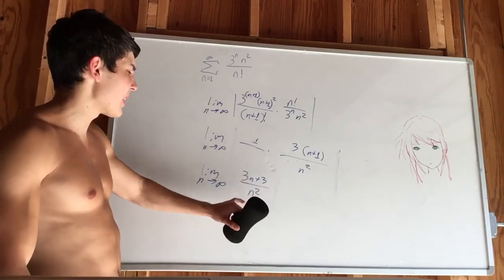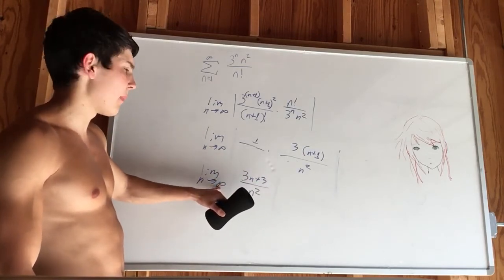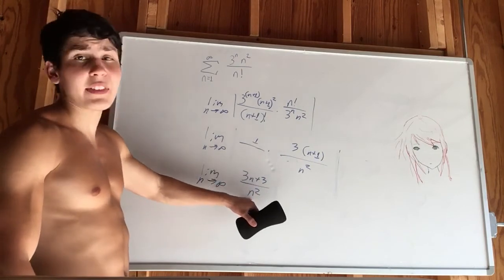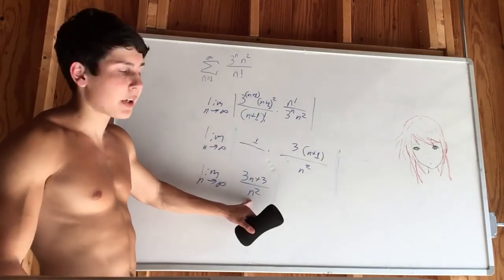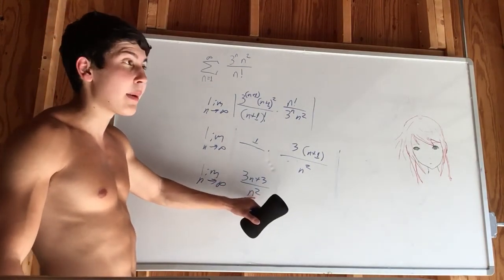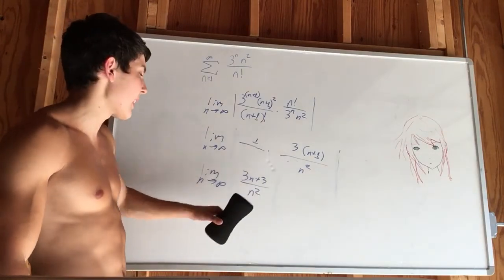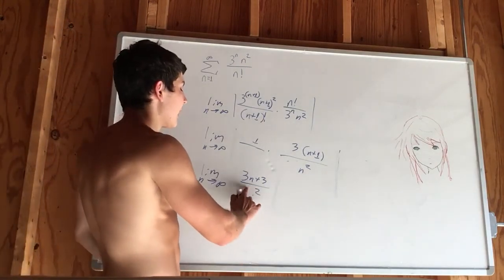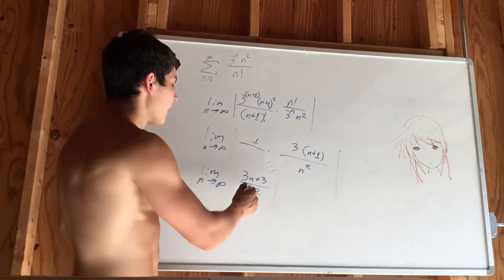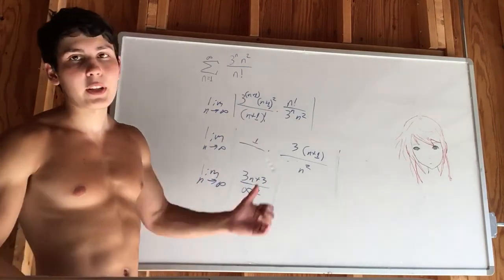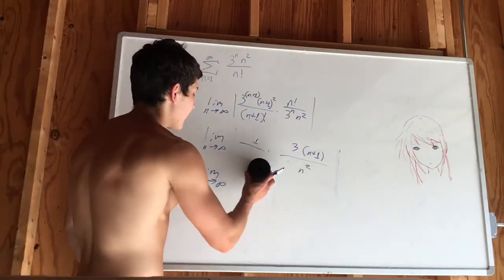And what happens here when we plug in infinity into this: we have a denominator which has a higher power. So when you have a higher power in the denominator, this goes to 0—because this is like infinity squared and that's just infinity. The more powerful infinity obliterates the numerator into 0, so this is 0.